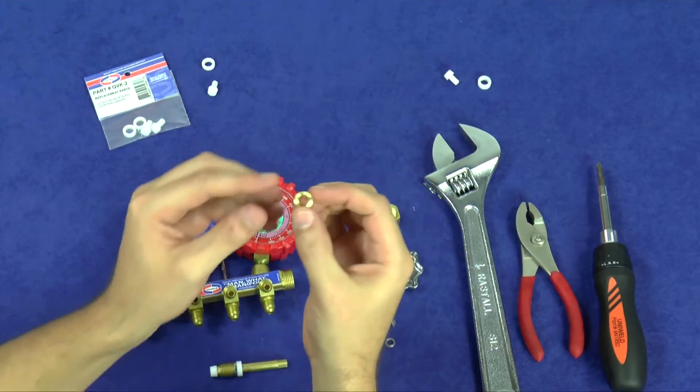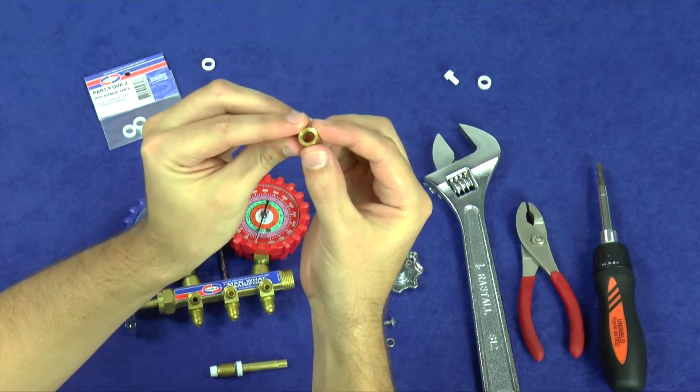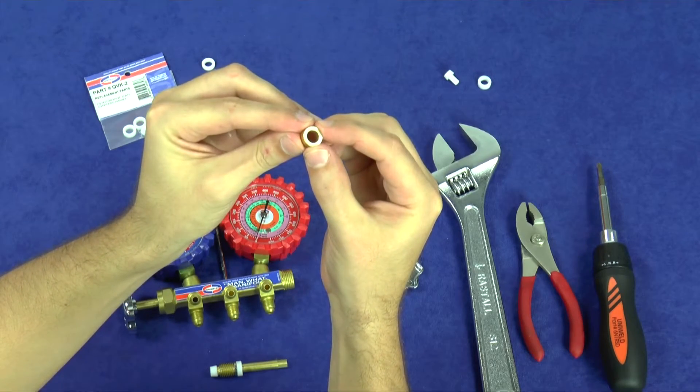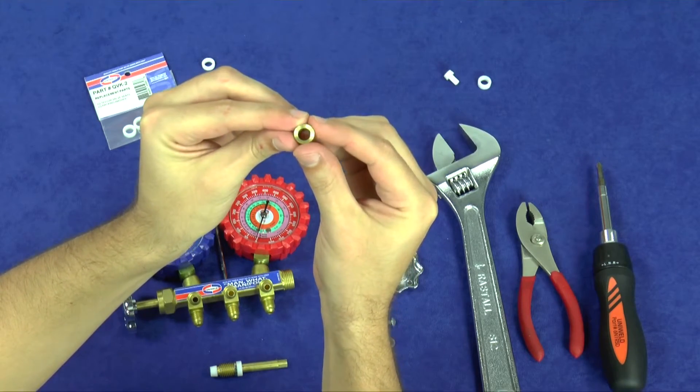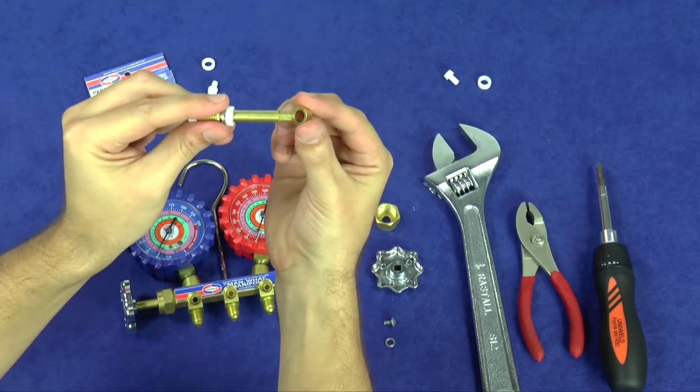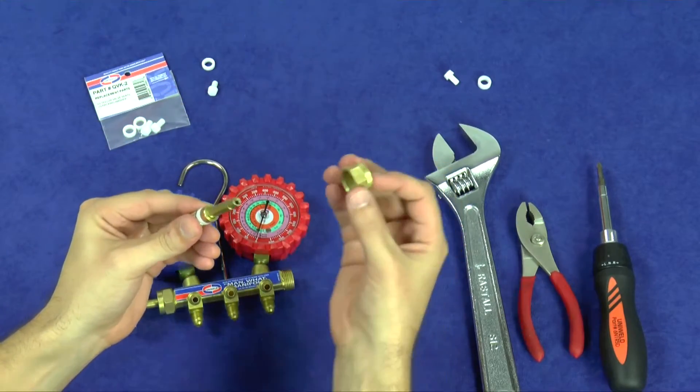Take note that the brass packing washer is tapered on one side. This design will compress the Teflon washer inward, allowing it to cold flow around the valve stem for a tight seal. Slide the brass packing washer on the valve stem with the tapered side facing the Teflon. Then replace the packing nut and metal hand wheel.